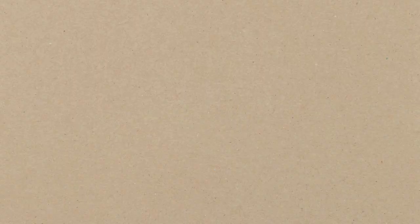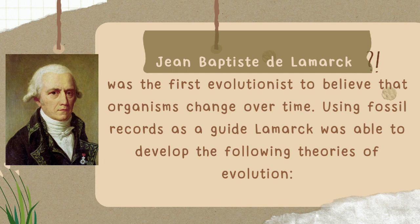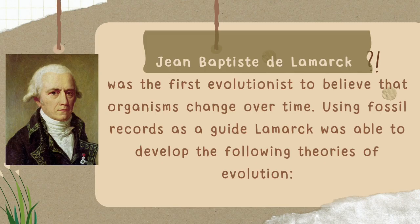We have different theories of evolution. Jean-Baptiste de Lamarck was the first evolutionist to believe that organisms change over time. Using fossil records as a guide, Lamarck developed the following theories of evolution: the theory of need, the theory of use and disuse, and the theory of acquired characteristics.